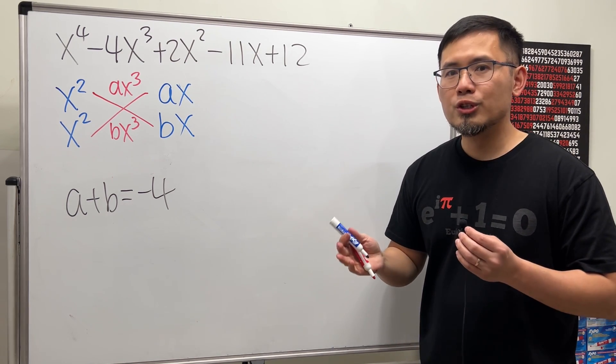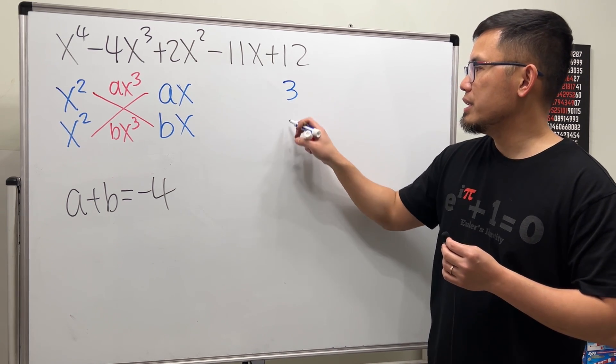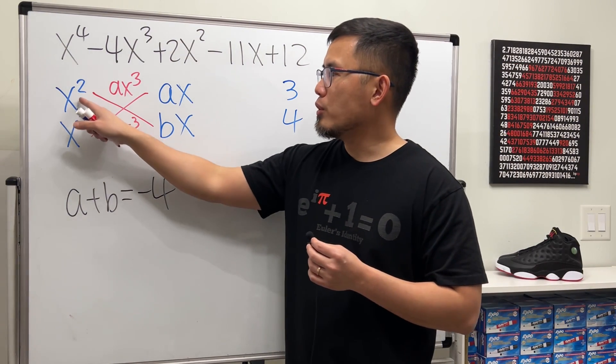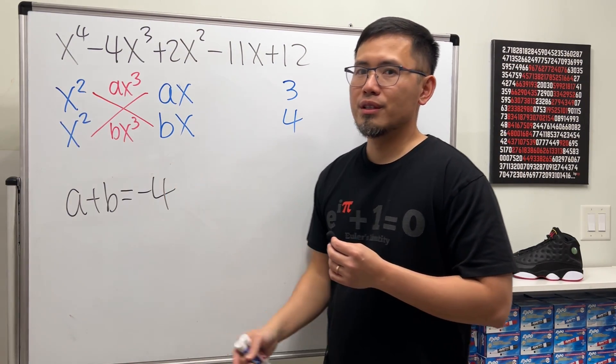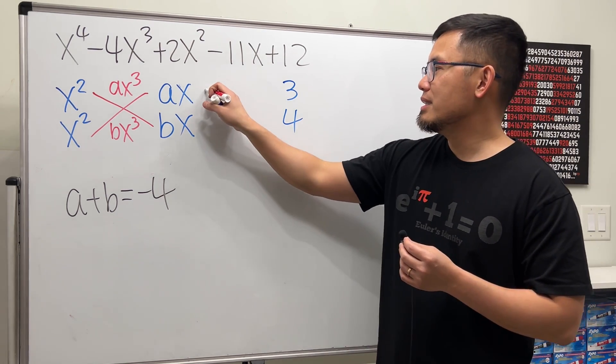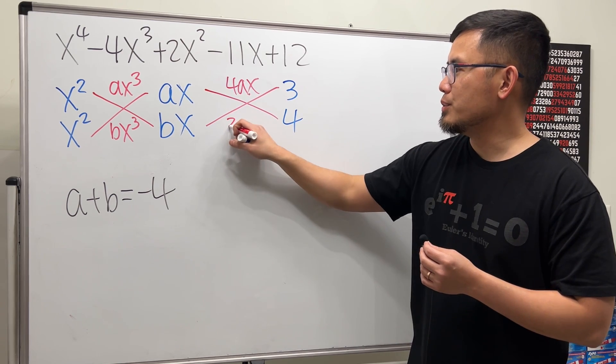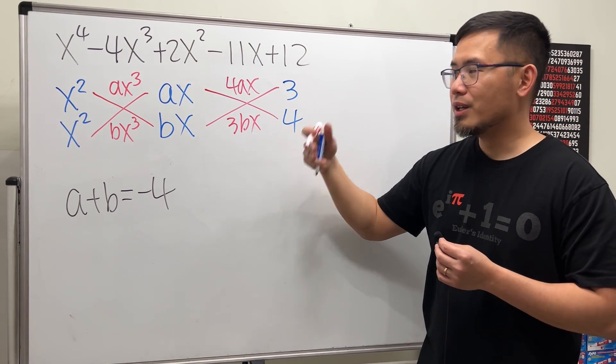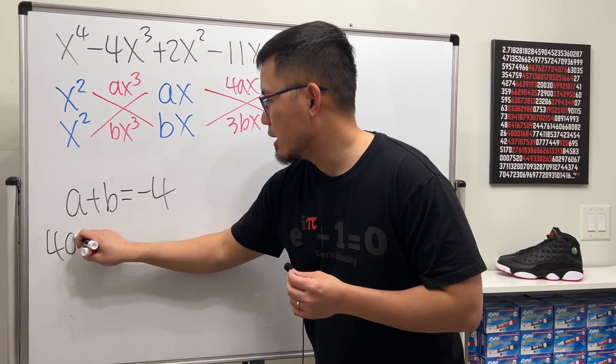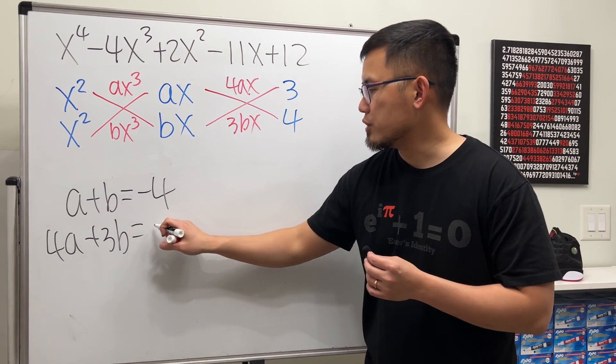So now what? Well, just choose another combination. This time, I'm going to use 3 and 4. And in fact, the order right here doesn't matter because both of these are just x squared. Sometimes, you have to worry about the order right here as well. By the way though, you see, this times this is 4ax. This times this is 3bx. Do what we did earlier. We will have 4a plus 3b equals that coefficient, which is negative 11.